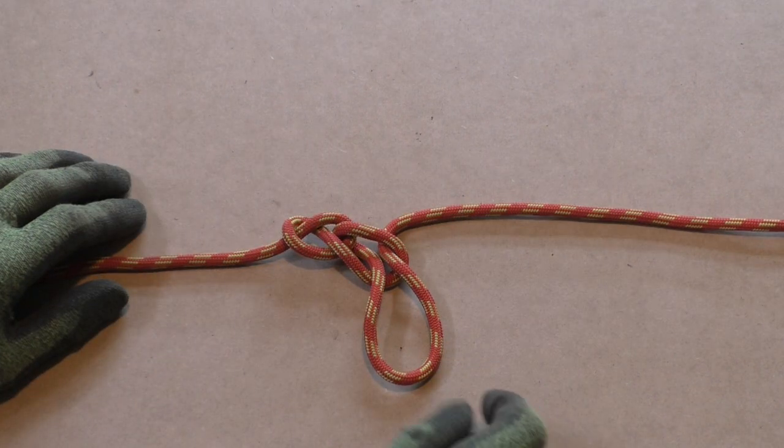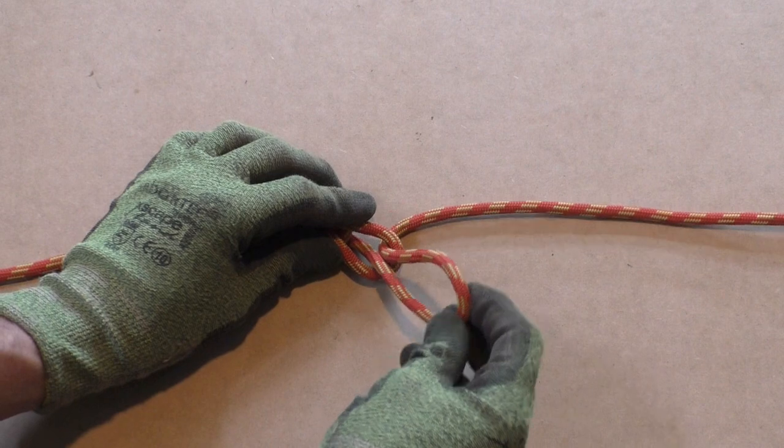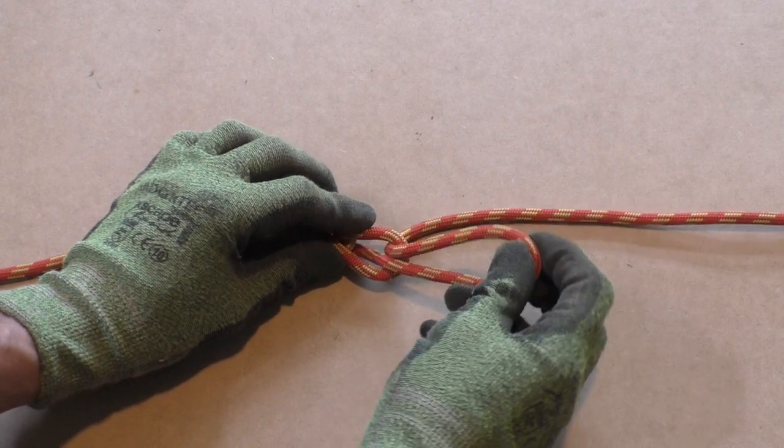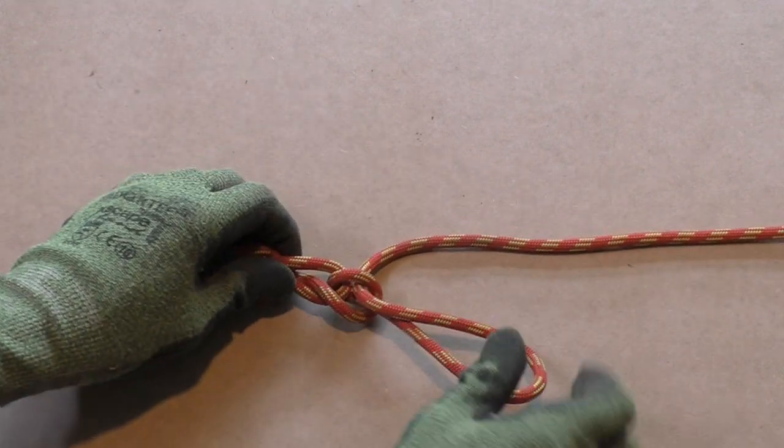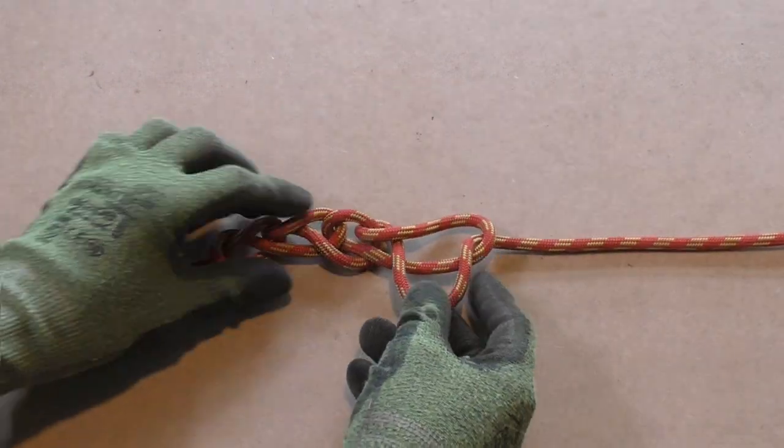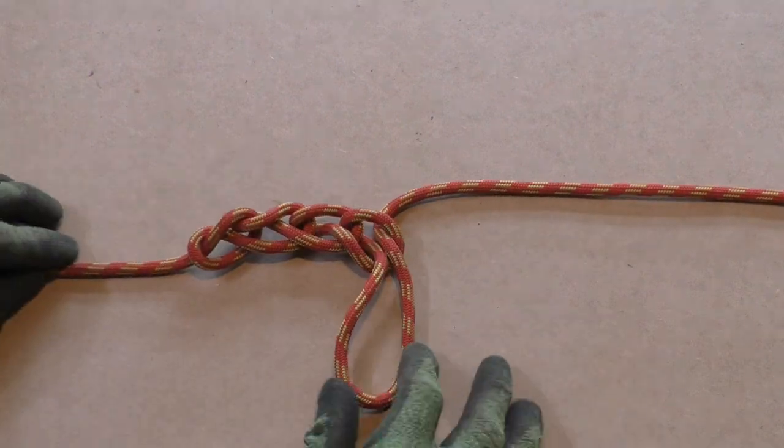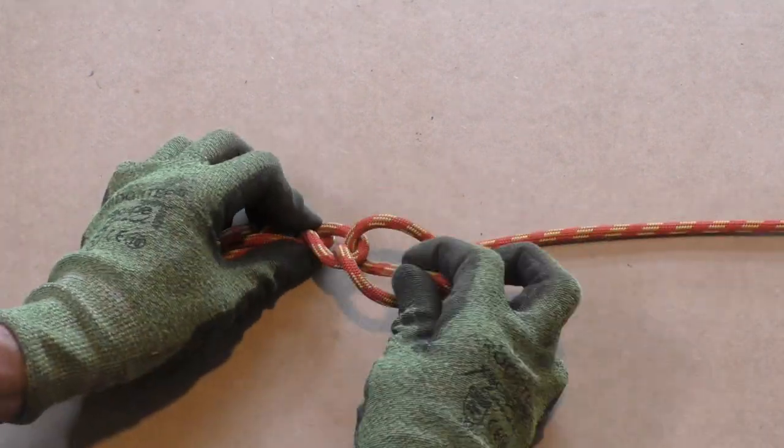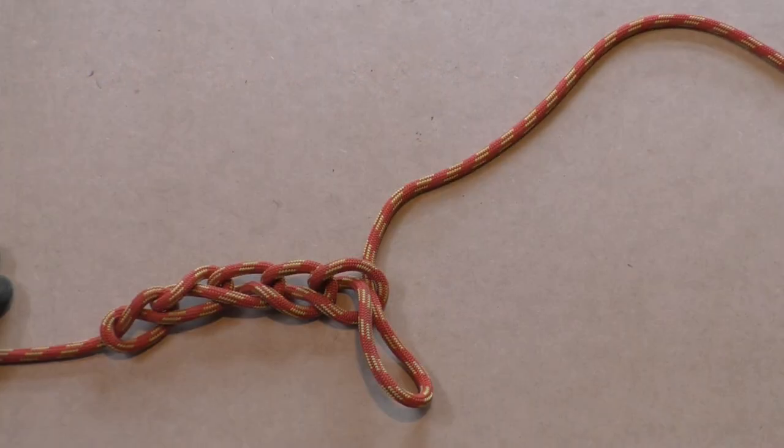From here on, you basically keep repeating those steps to make your chain sinnet or daisy chain. Keep repeating the process until you reach the end of the rope. If you don't want to add too much strain to your rope, then don't pull the individual links too tight but leave a bit of slack.